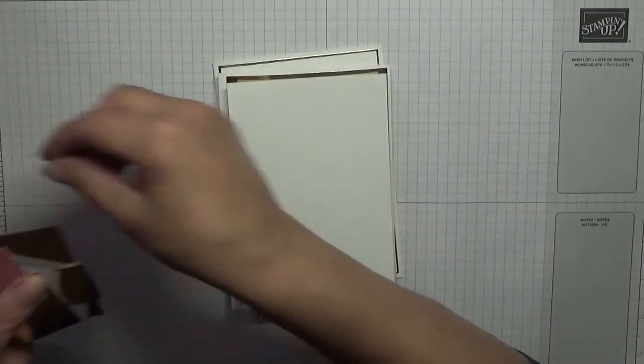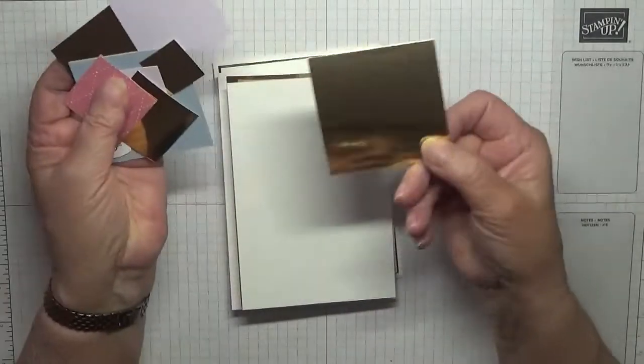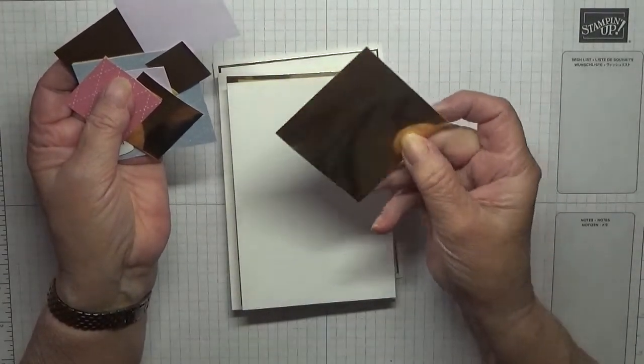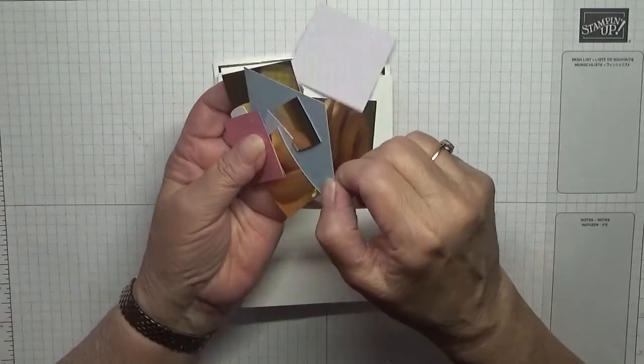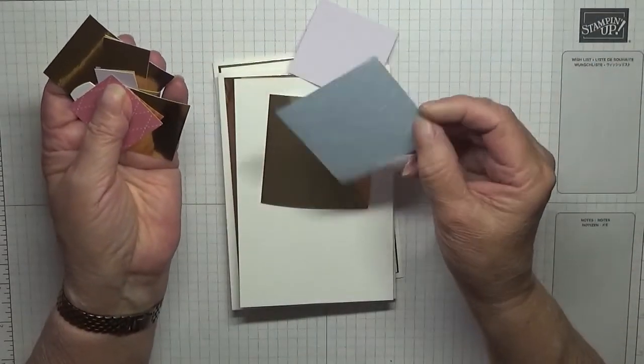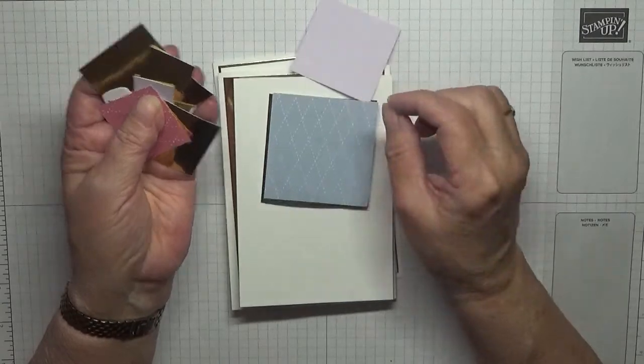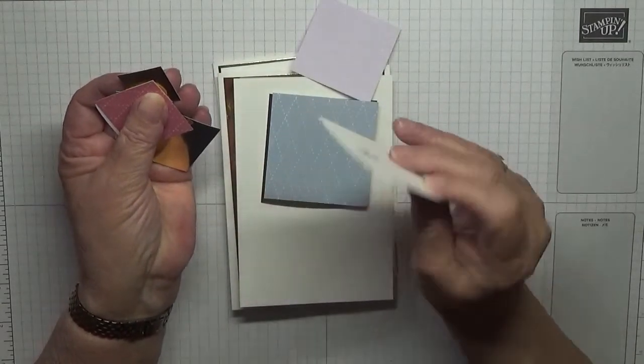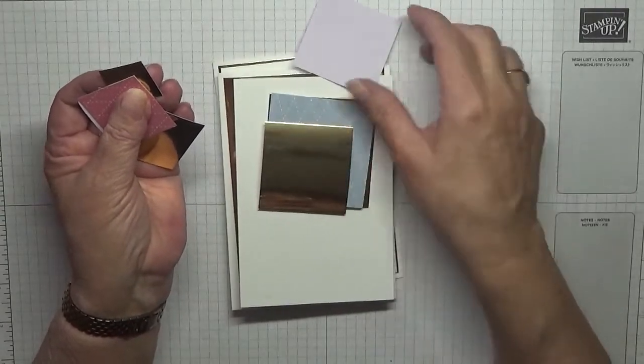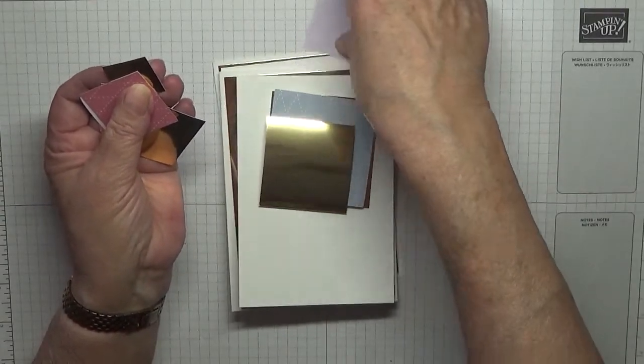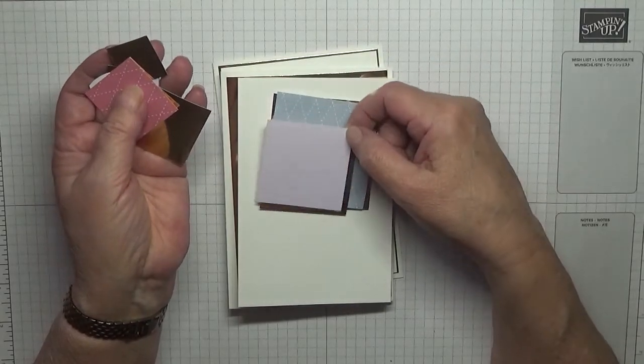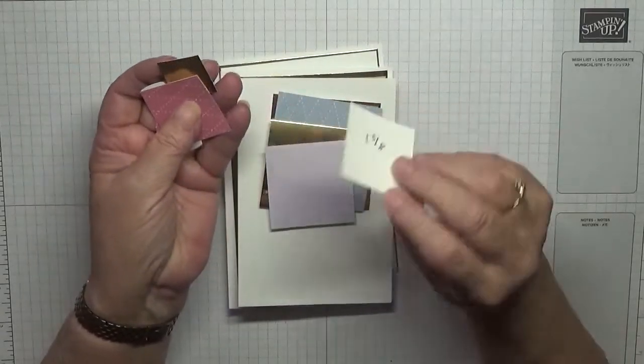I've also got lots of pieces of gold foil card. This one's two and five eighths by two and five eighths, so that will make this one two and a half by two and a half.